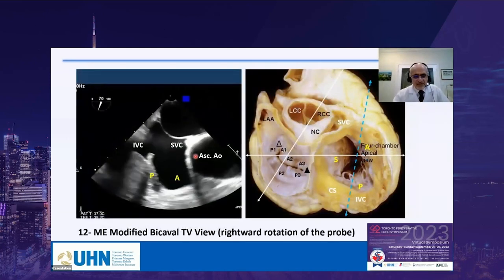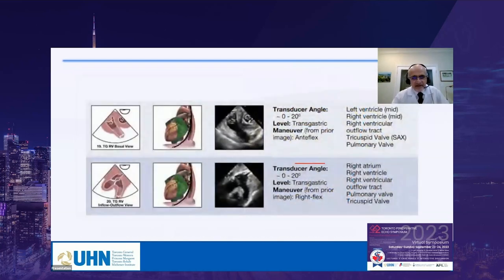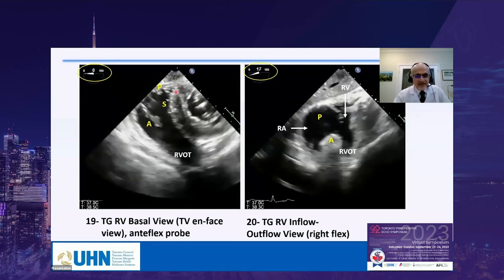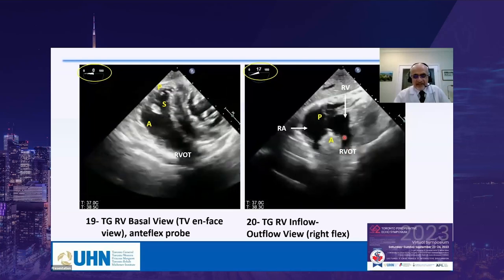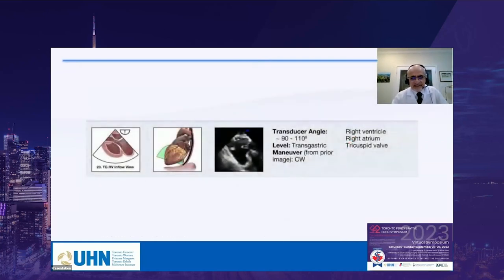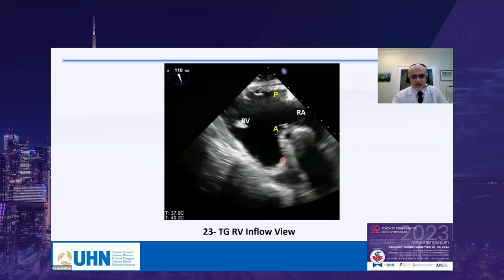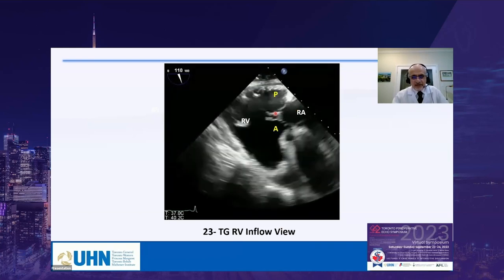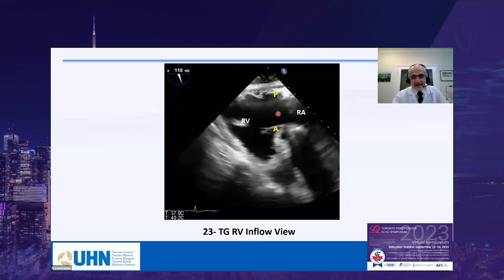In view 12 — the mid-esophageal modified bicaval TV view — we see the anterior leaflet and the posterior leaflet. In view 19, the transgastric RV basal view, we see all three leaflets: septal, posterior, and anterior. In view 20, the transgastric RV inflow-outflow view, we see the anterior and posterior leaflets. In view 23, the transgastric RV inflow view, the anterior leaflet is at the bottom of the image and the posterior leaflet at the top — a very good view for assessing the degree of TR and aligning Doppler to measure the RV systolic pressure.